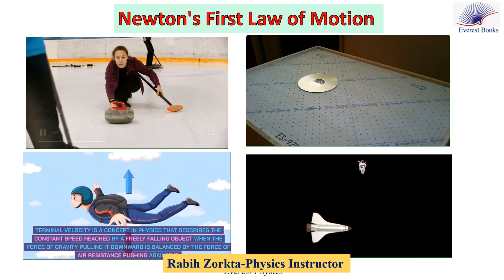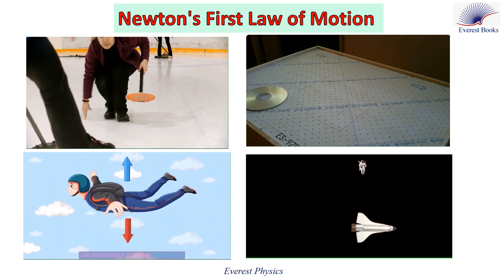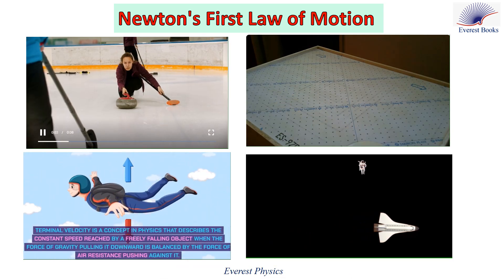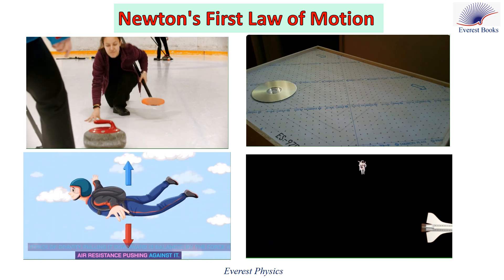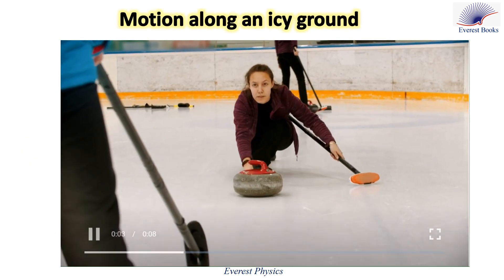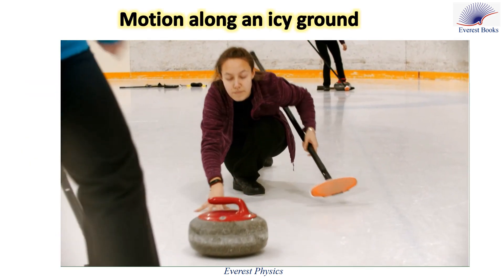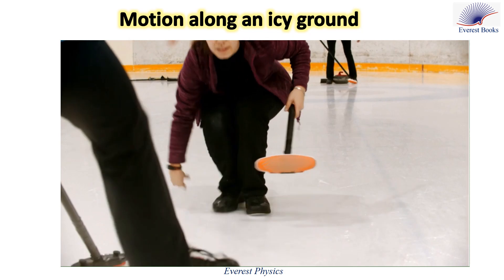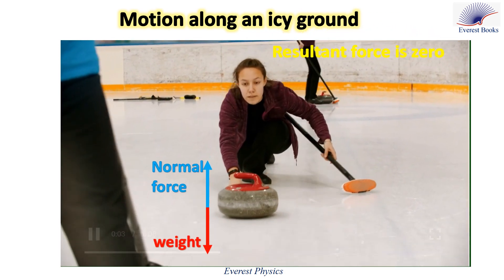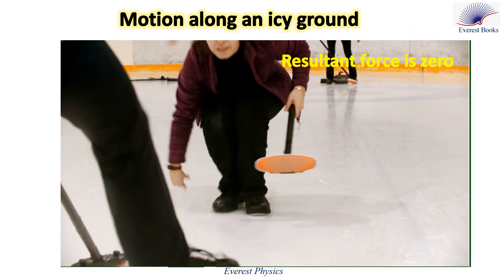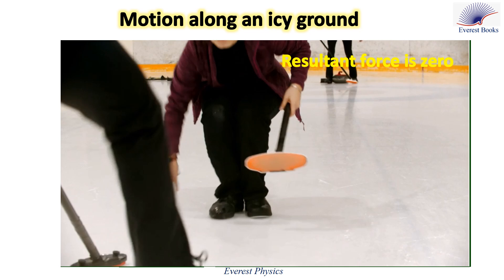Let's explore different motions in everyday situations that demonstrate Newton's first law of motion. In this scenario, an object slides along a horizontal icy ground. The normal force and the weight of the sliding object cancel each other. Therefore, according to Newton's first law, the object slides with constant velocity.